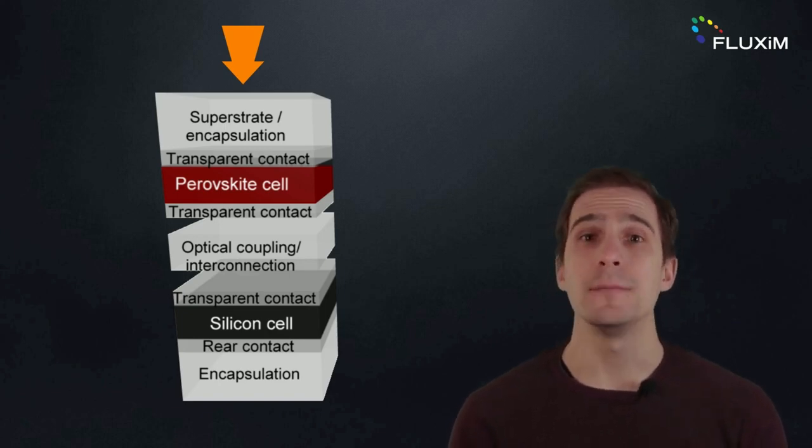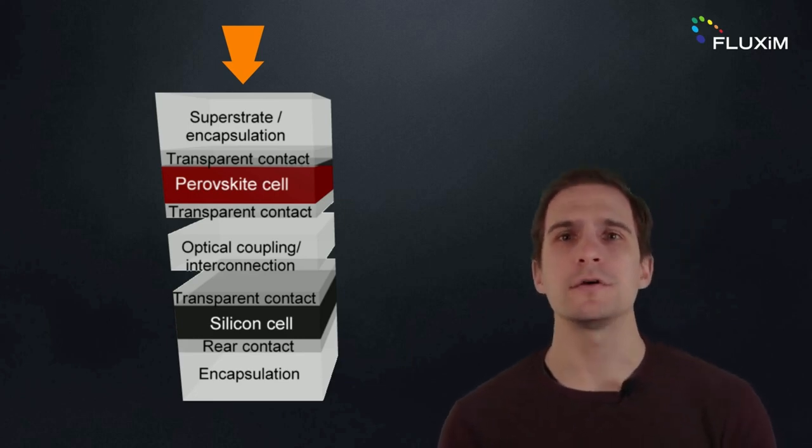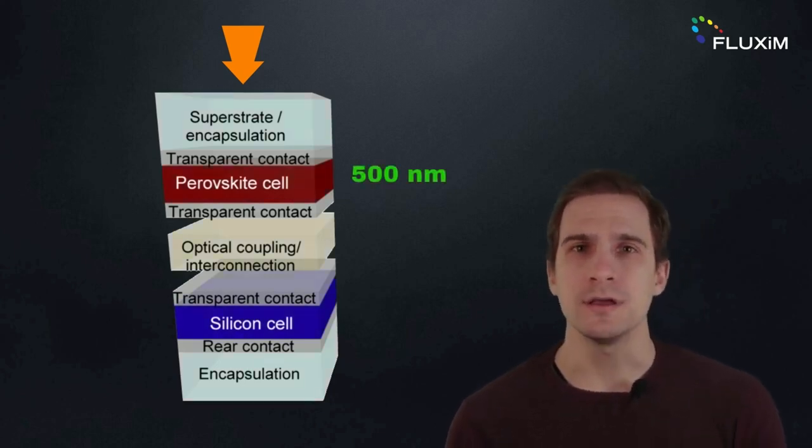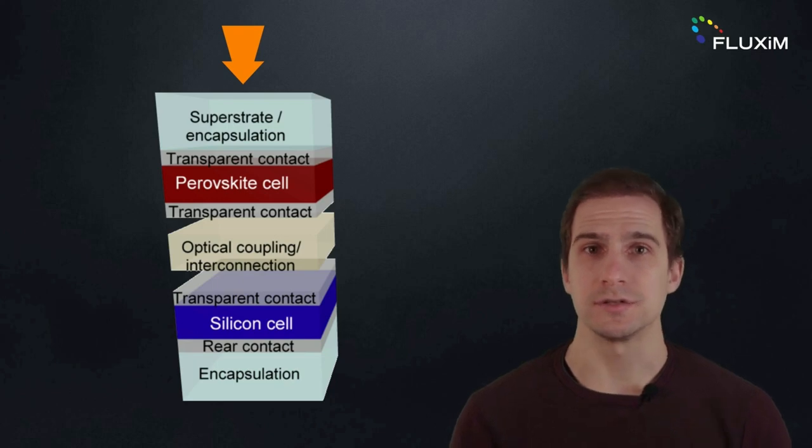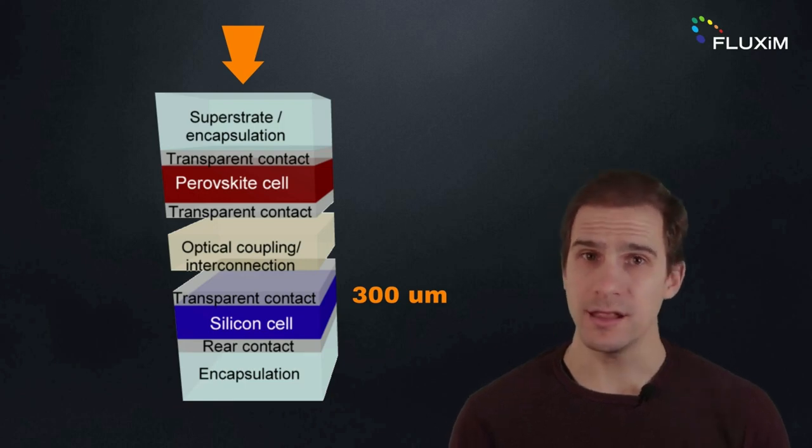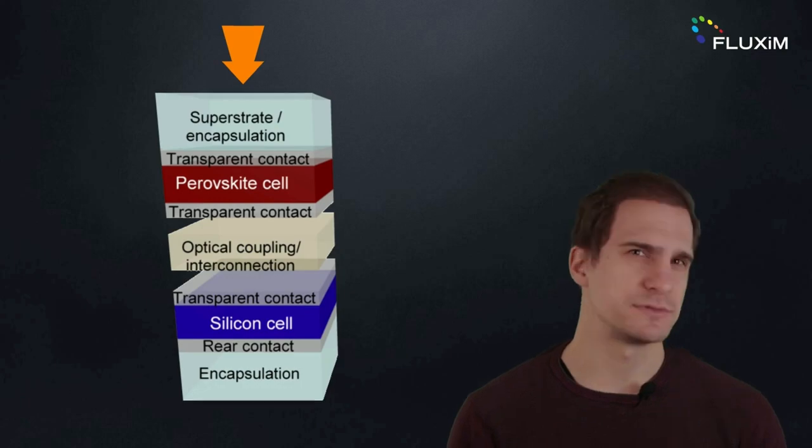Additionally, perovskites have a direct bandgap and a strong light absorption coefficient. Therefore, thicknesses of around 500 nm are sufficient for solar cell devices. In comparison, the silicon absorbing layer in a solar cell has a thickness of up to 300 micrometers because of the indirect bandgap and low absorption coefficient. That's almost a thousand times thicker.